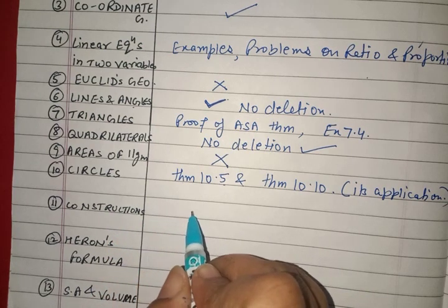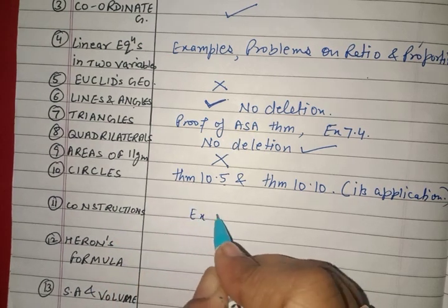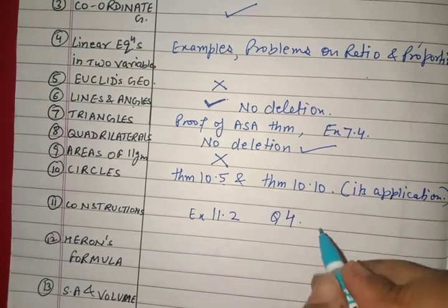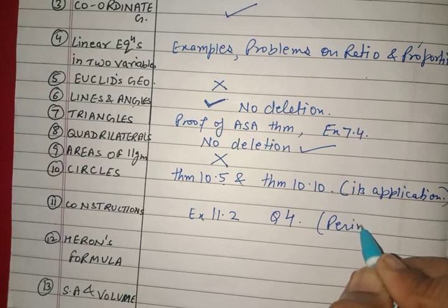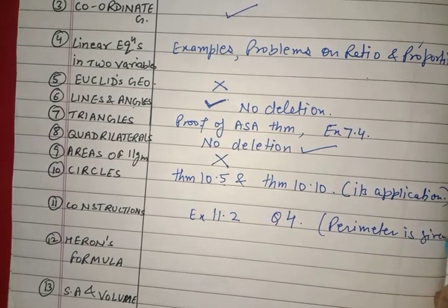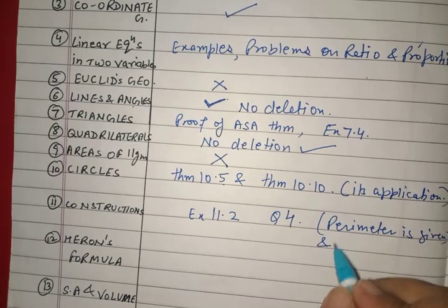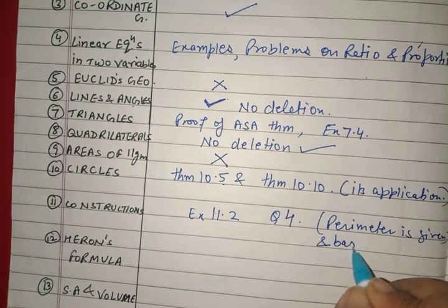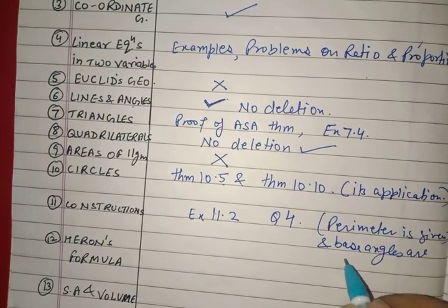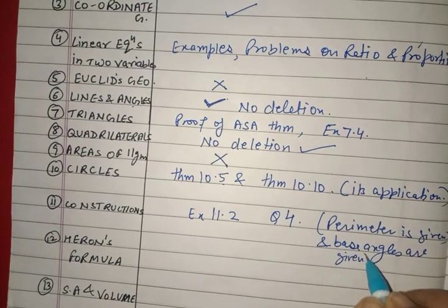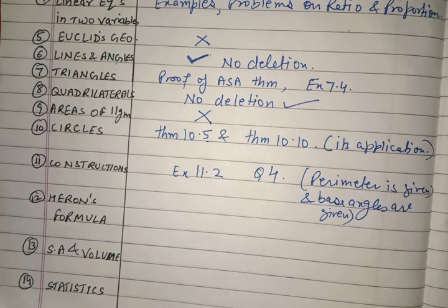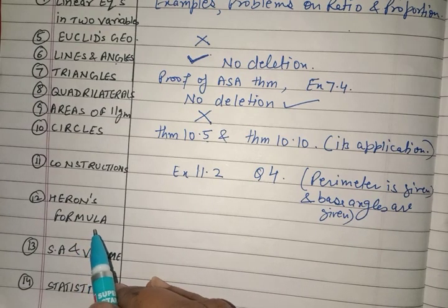In the Constructions chapter, one question is deleted: Exercise 11.2, Question 4, where the perimeter is given and base angles are given. No need to do this particular question.